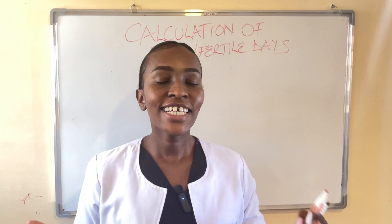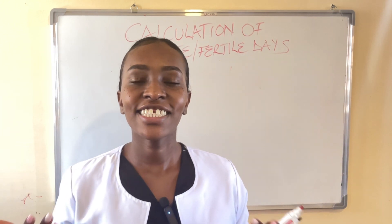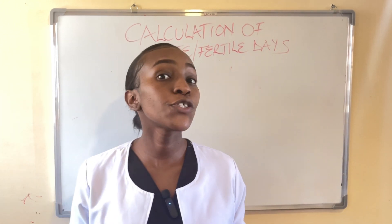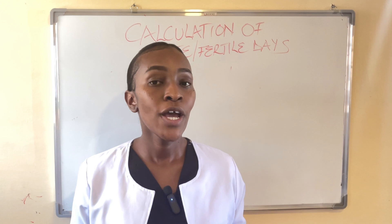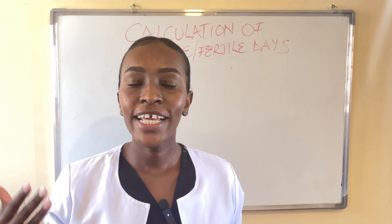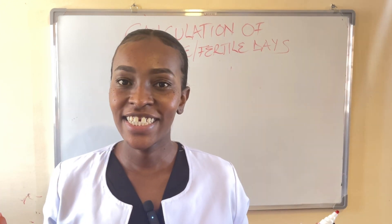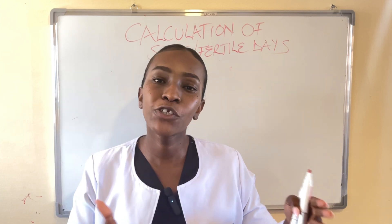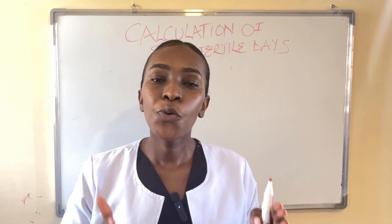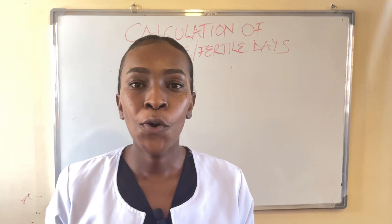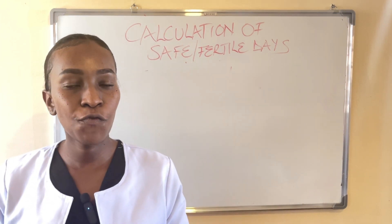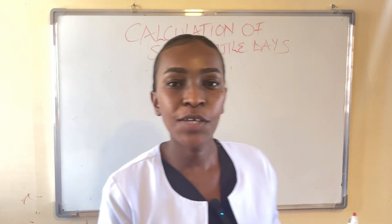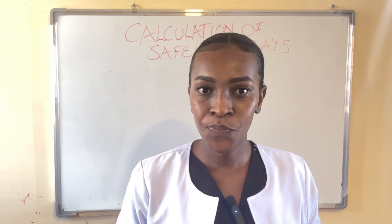But before that, let us understand the term menstrual cycle. If I ask most of you what is your menstrual cycle, some will tell me one day, four days, seven days. Your menstrual cycle does not mean the period through which you bleed. Your menstrual cycle means the first day you receive your period to the last day before you receive your next period.